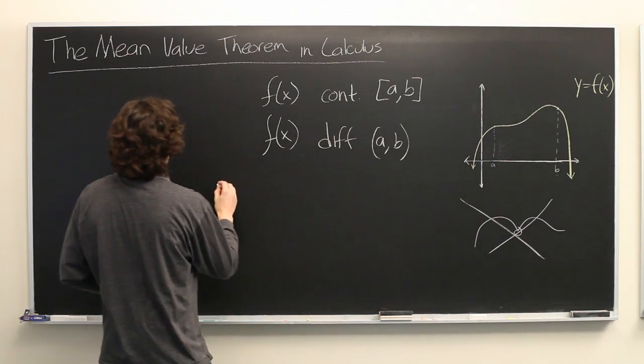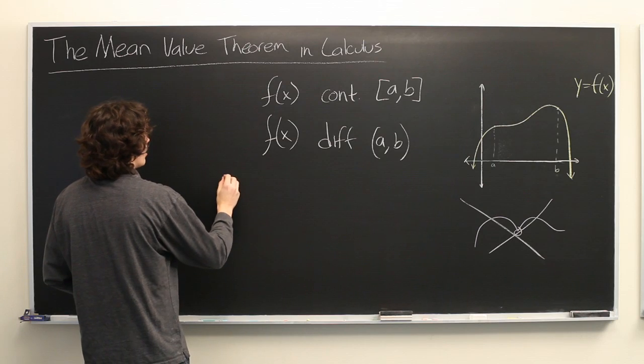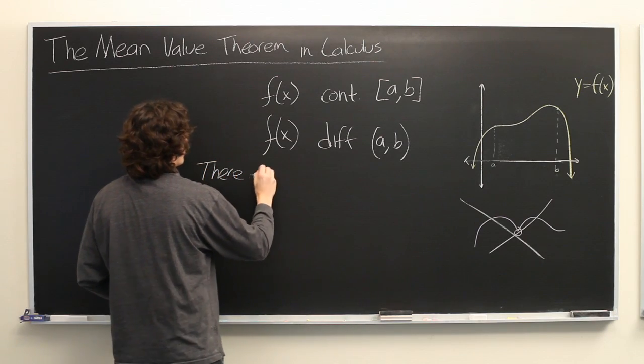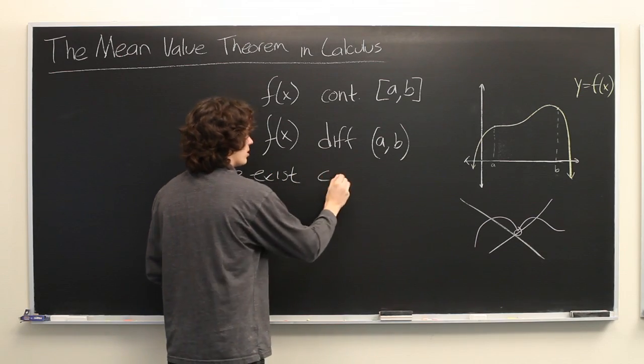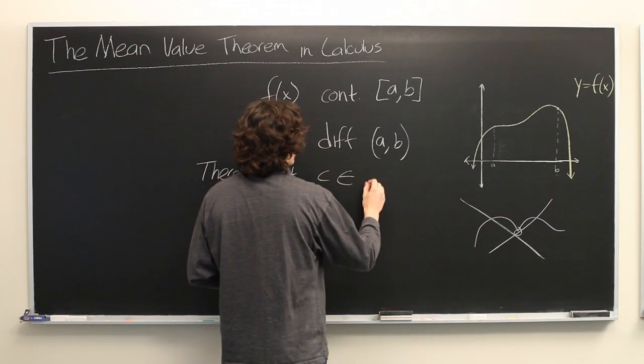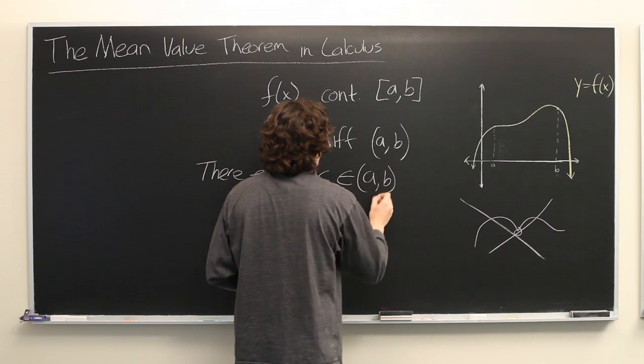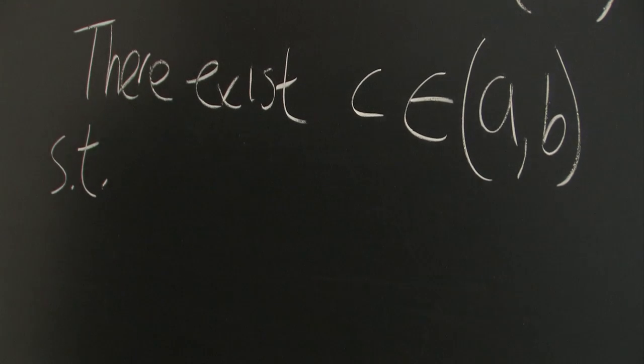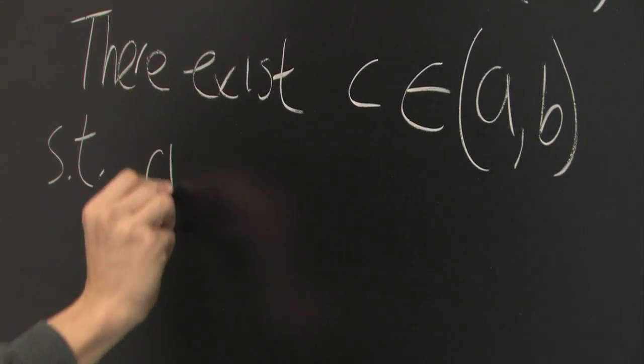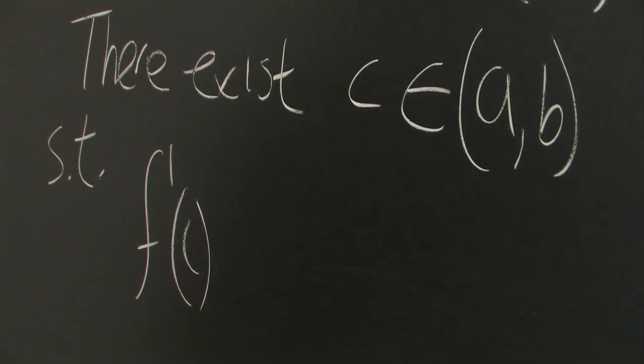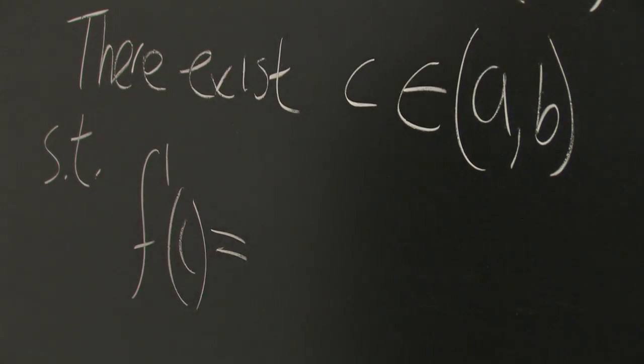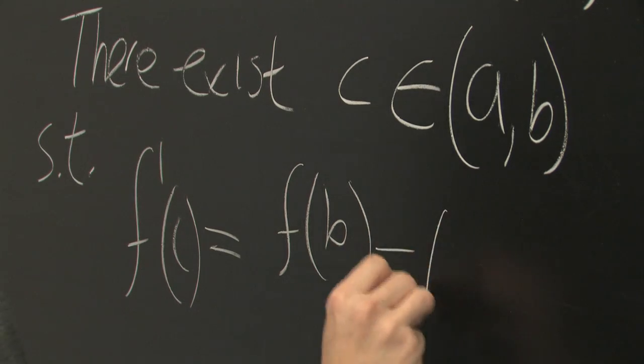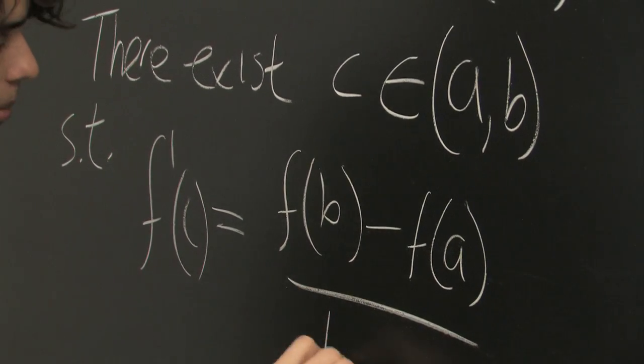This tells us, the mean value theorem that is, tells us that there exists some point c on a, b, such that f prime of c, or the derivative of f at c, is equal to f of b minus f of a over b minus a.